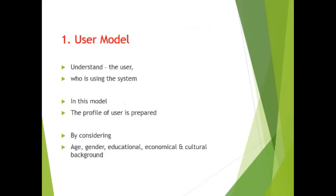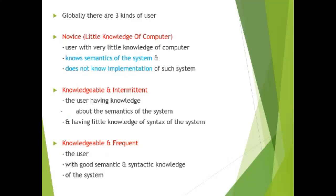The first is the user model. Understand the user who is using the system. In this model, the profile of the user is prepared by considering age, gender, educational, economical, and cultural background. Globally, there are three kinds of users: novice, knowledgeable and intermittent, and knowledgeable and frequent.